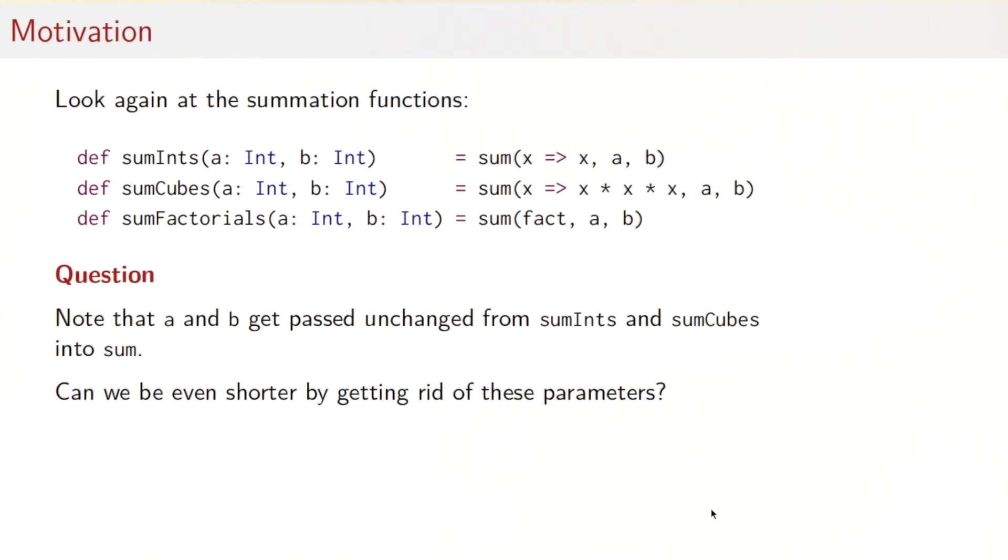For our motivation, let's look again at our summation functions: sum ints, sum cubes, sum factorials. We could factor out the body of these functions and now simply pass the function to apply to each element in the interval and the two bounds. But there's still repetition. Each of the three functions takes two parameters a and b and then passes them on to the sum function. Can we get rid of these parameters and thereby become even shorter?